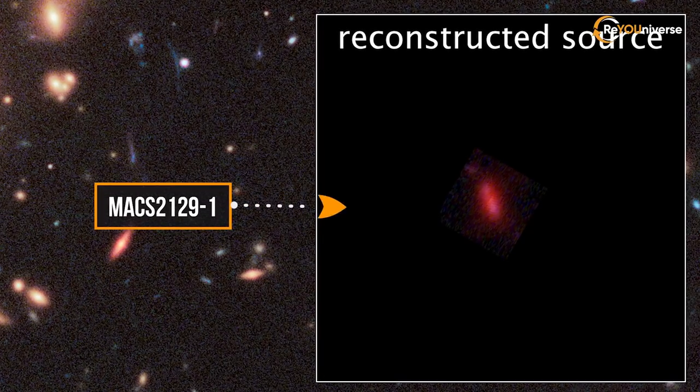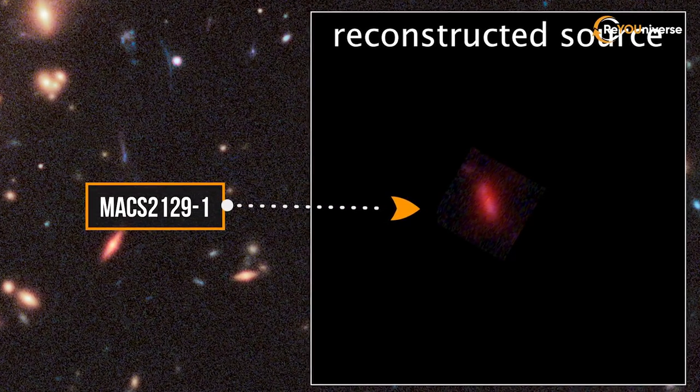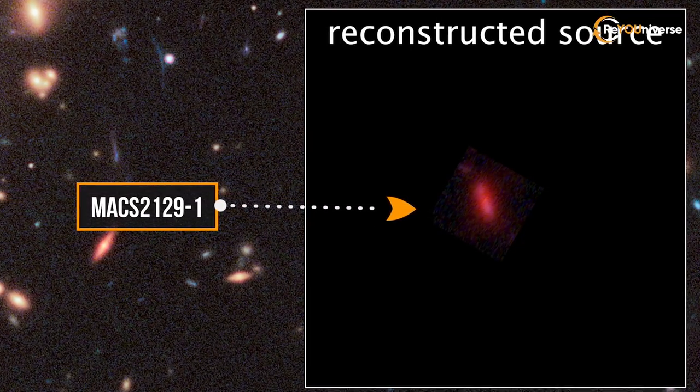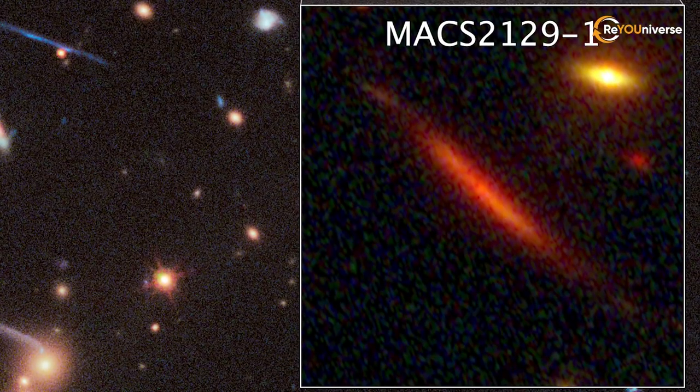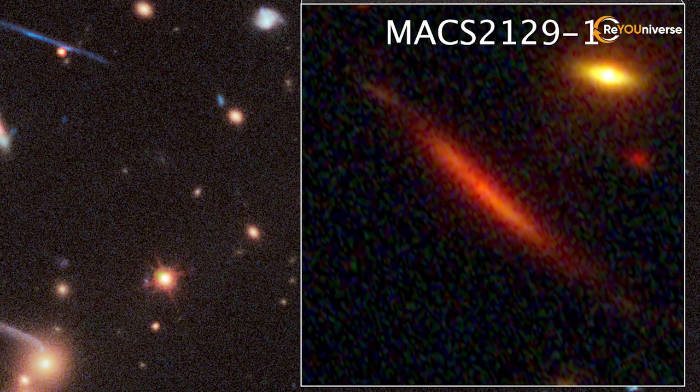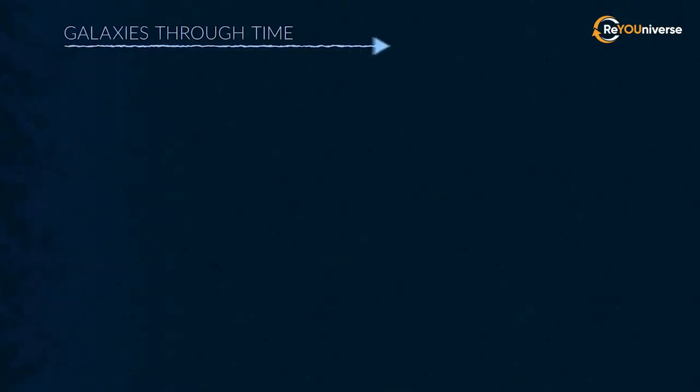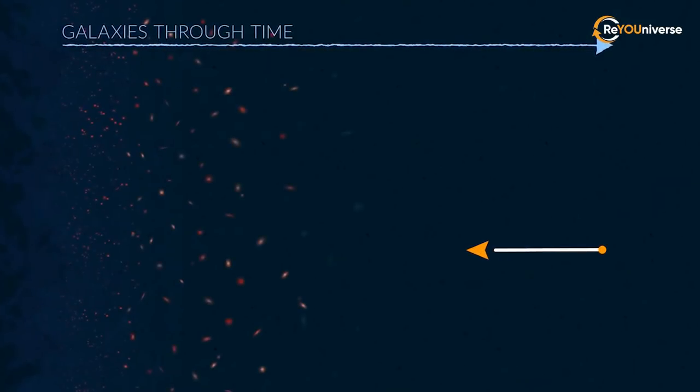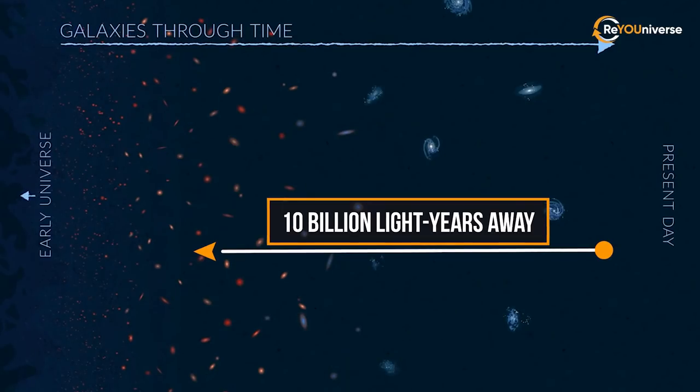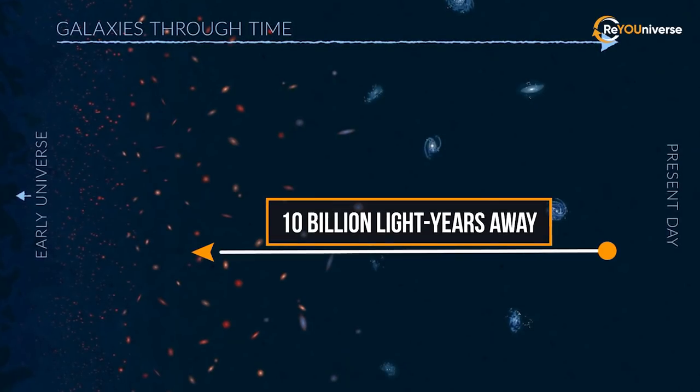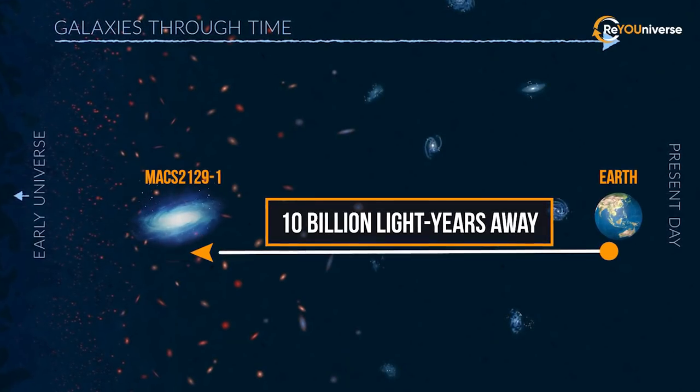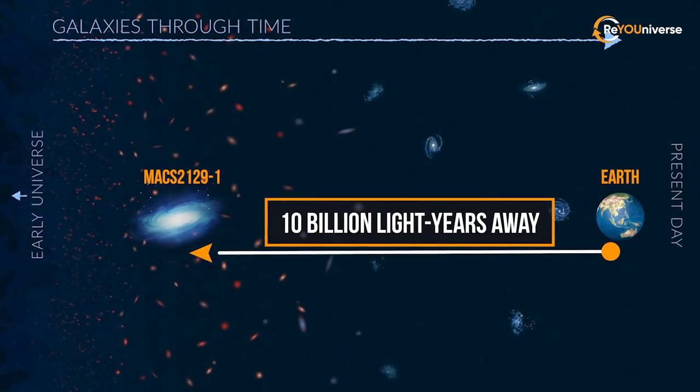This dim and inconspicuous galaxy might have never claimed astronomers' attention. But, as you know, one shouldn't judge the book by its cover, especially if you were looking at something through a telescope that is 10 billion light-years away, which, coincidentally, is the exact distance from Earth to MACS-2129-1.